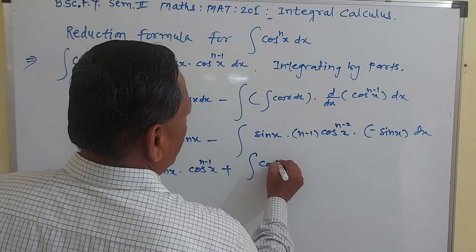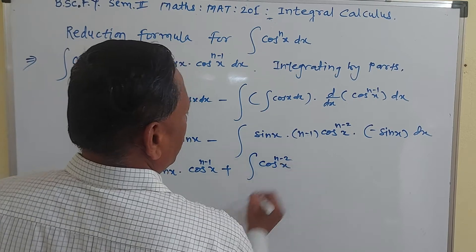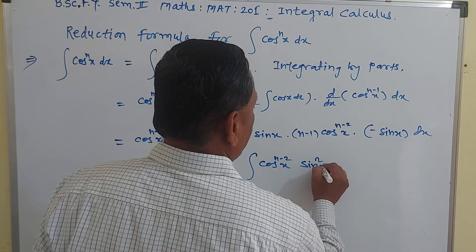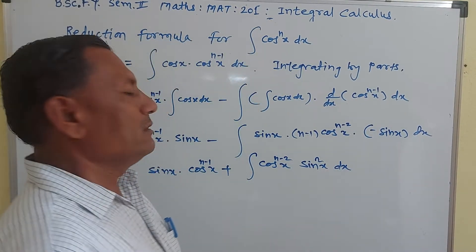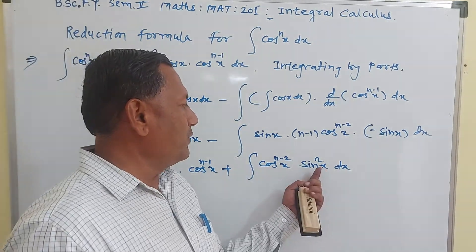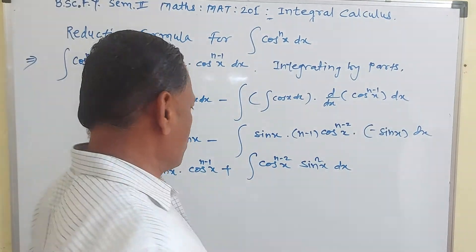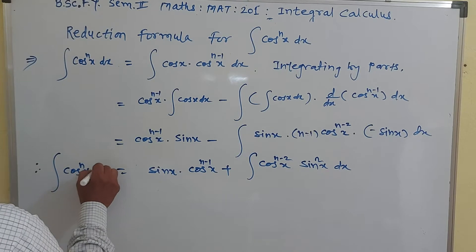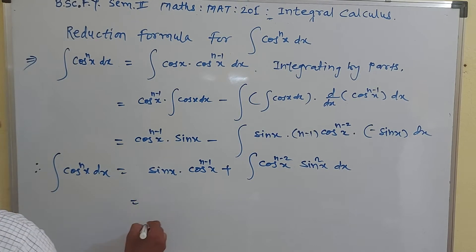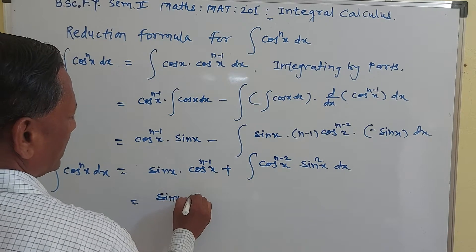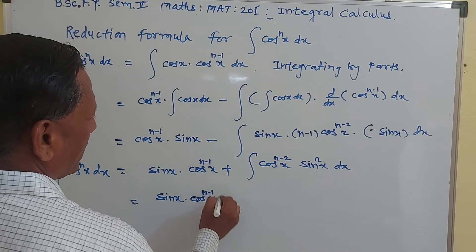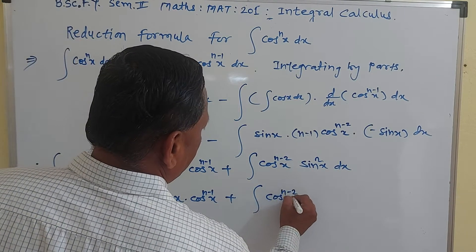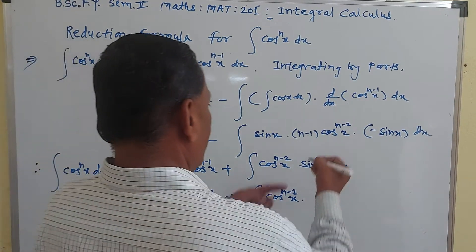This gives sin x into cos raised to n minus 1 x, plus the integration of cos raised to n minus 2 x into sin x into sin x, which is sin squared x dx. Since sin squared x plus cos squared x equals 1, sin squared x can be written as 1 minus cos squared x. The left side is the integration of cos raised to n x dx.